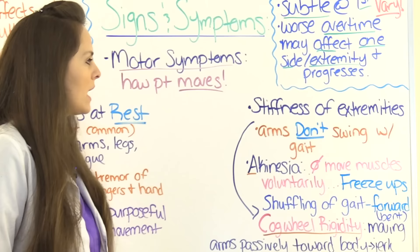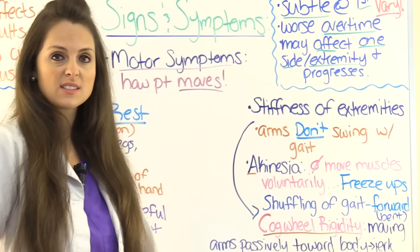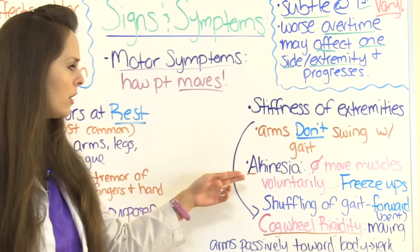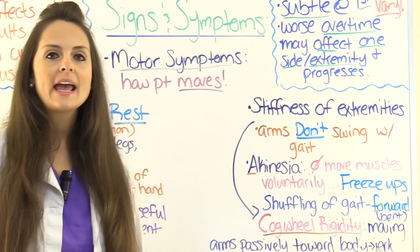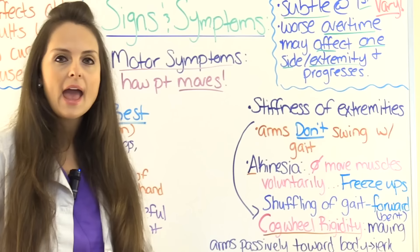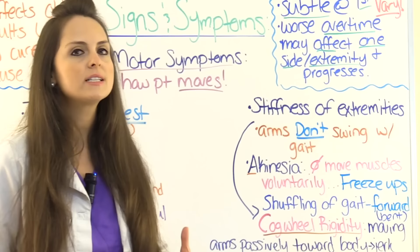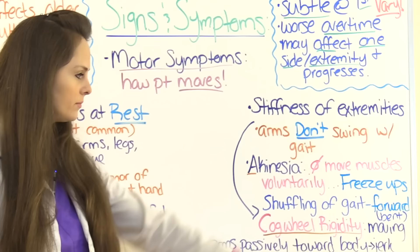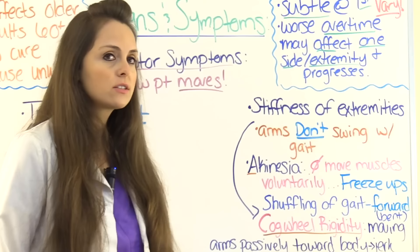Another thing patients can experience is stiffness of the extremities, which can cause their arms to remain still at their sides instead of swinging while they walk — giving them an abnormal-looking gait. They can also experience what's called akinesia, where they lose the ability to do movements voluntarily. For instance, they can be walking and suddenly freeze up — their legs freeze and it feels like their feet are stuck to the ground. This is termed 'freeze ups' in Parkinson's disease. This stiffness also leads to a shuffling gait and a forward-bent posture while walking.